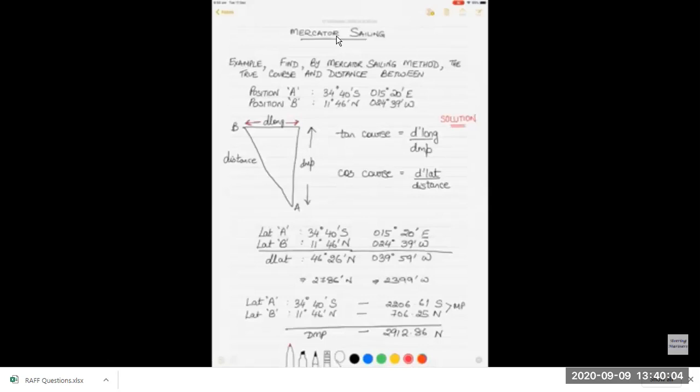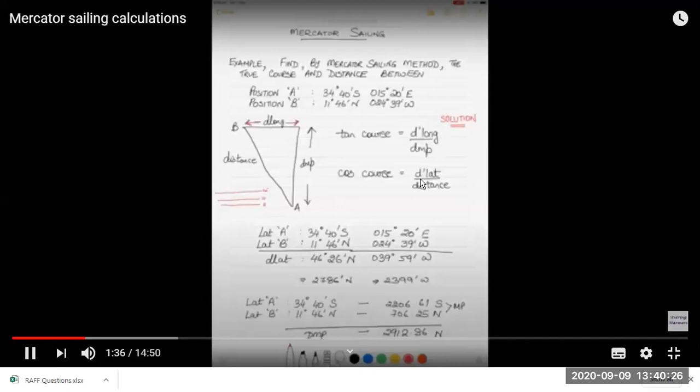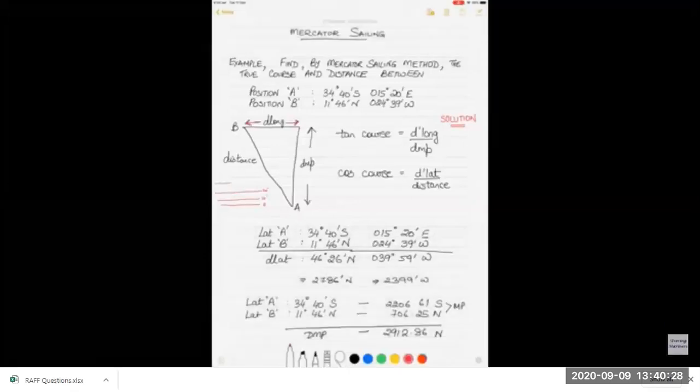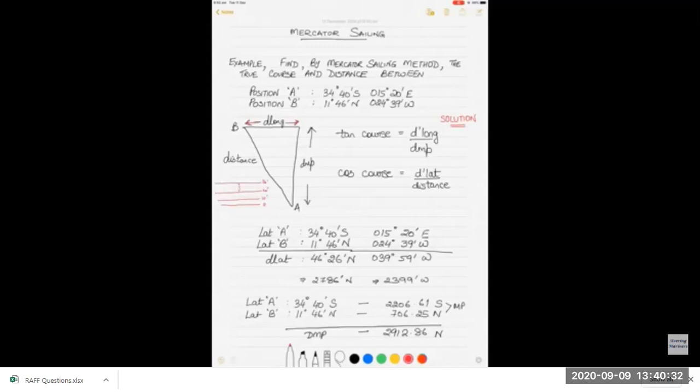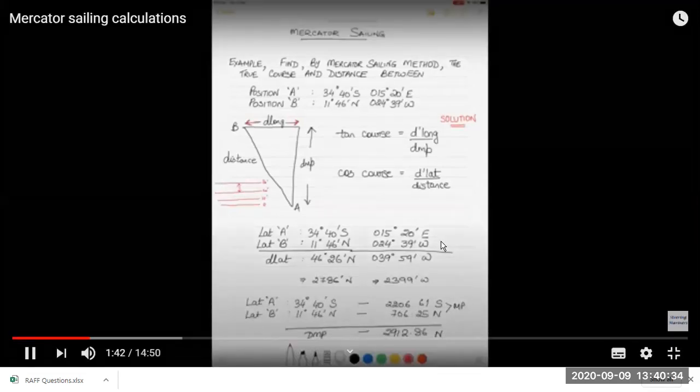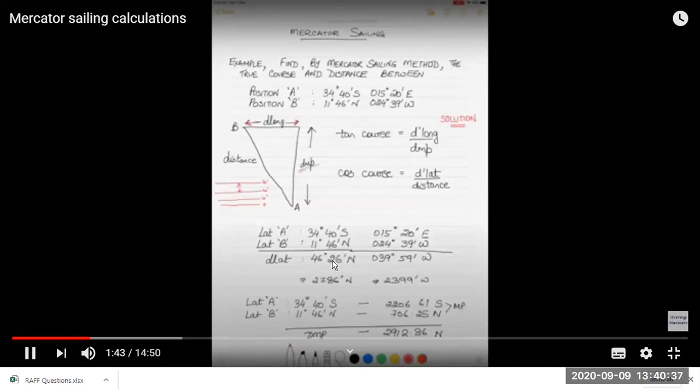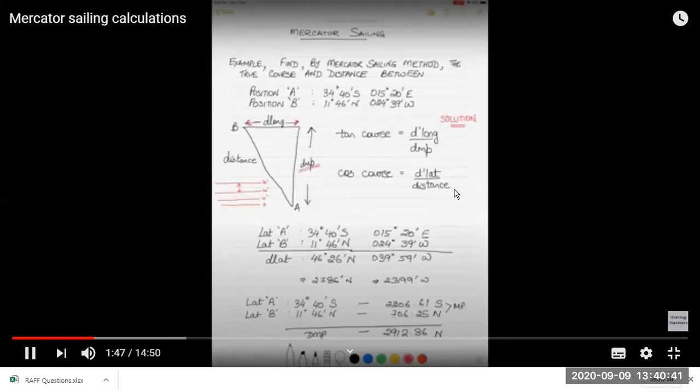Between 15°20'E and 24°39'W is 39°59'W. The naming will be: if we are going north or south, difference in latitude we are going north so that will be north. In longitude we are going to west so that will be west. Then we convert them into minutes.